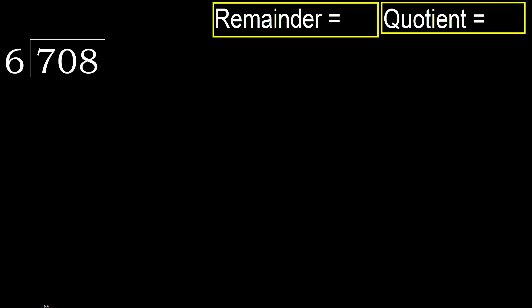708 divided by 6. 7 is not less, therefore start with 7. Multiply by which number is nearest but not greater than 6? Multiply by 2 gives 12, which is greater. Multiply by 1 gives 6, which is not greater. Okay, subtract. 7 minus 6 is 1.